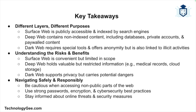To wrap up: the surface web, deep web, and dark web represent different layers of the internet, each with its own unique characteristics, uses, and challenges. The surface web is the most accessible and widely used layer; the deep web hosts a vast amount of hidden and restricted content; and the dark web, though often associated with illegal activities, can also serve legitimate purposes for those seeking privacy and anonymity. Understanding these layers is crucial for navigating the internet safely and responsibly.